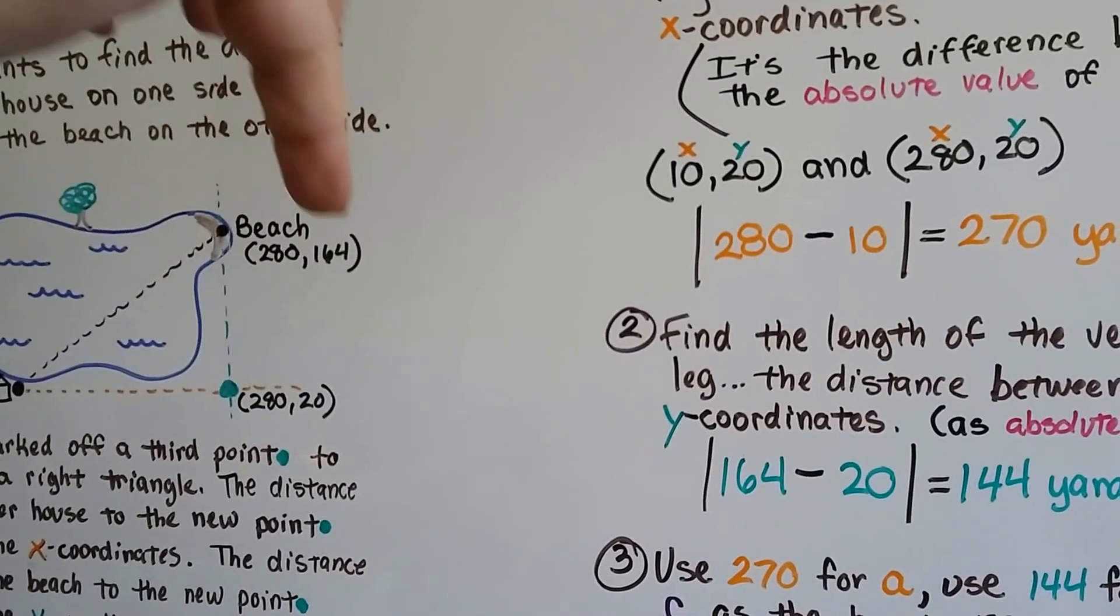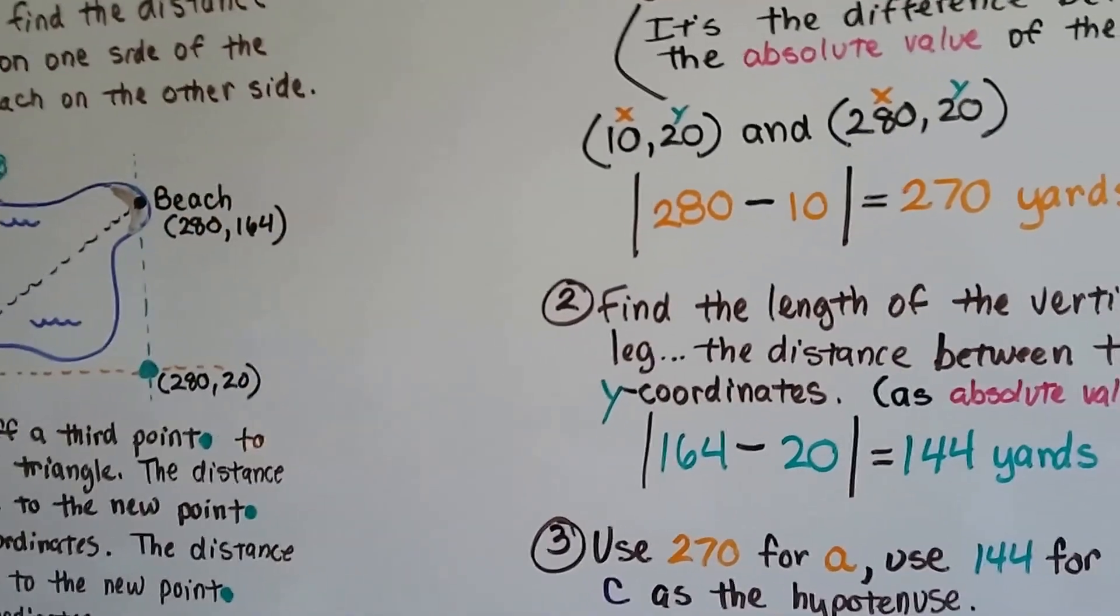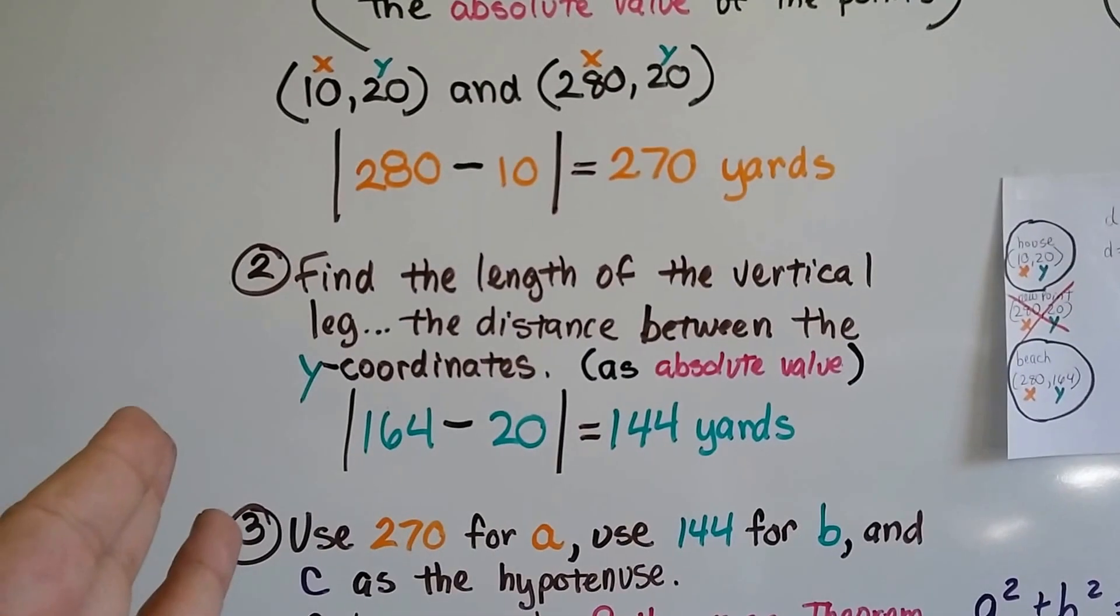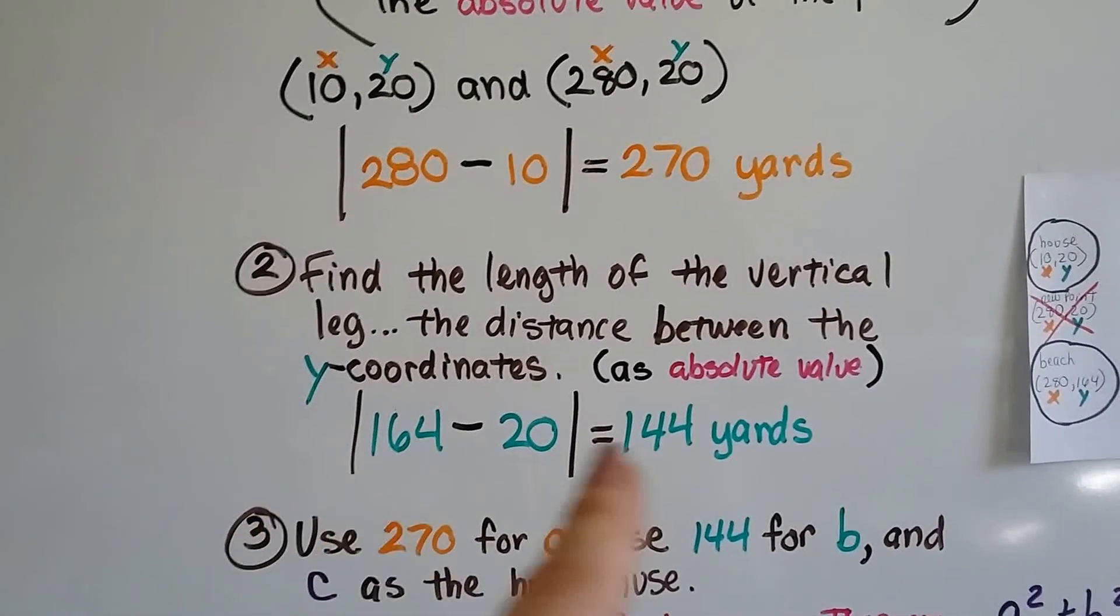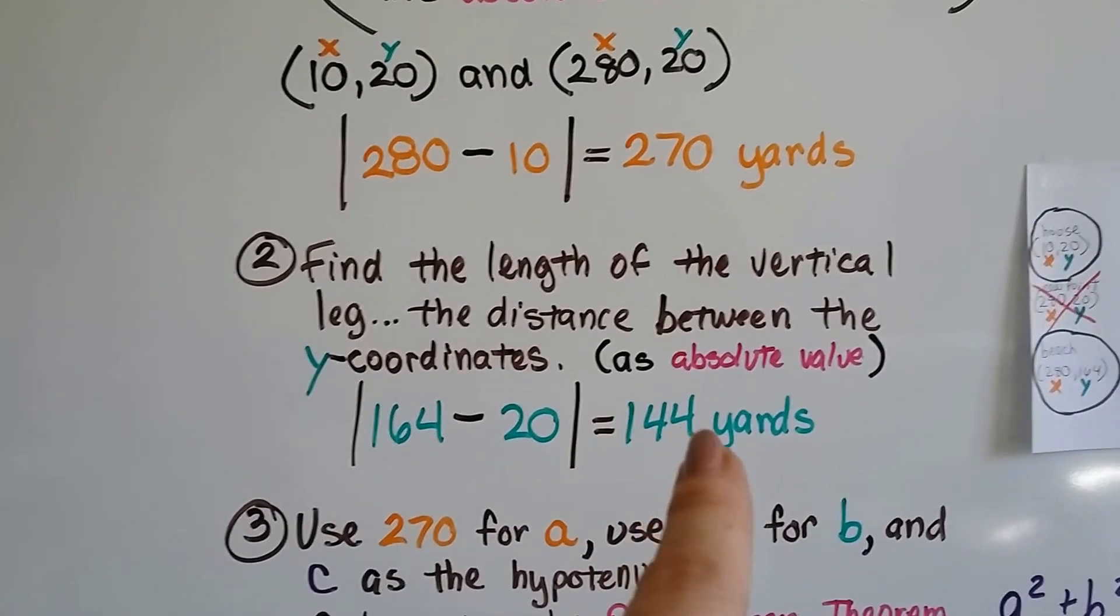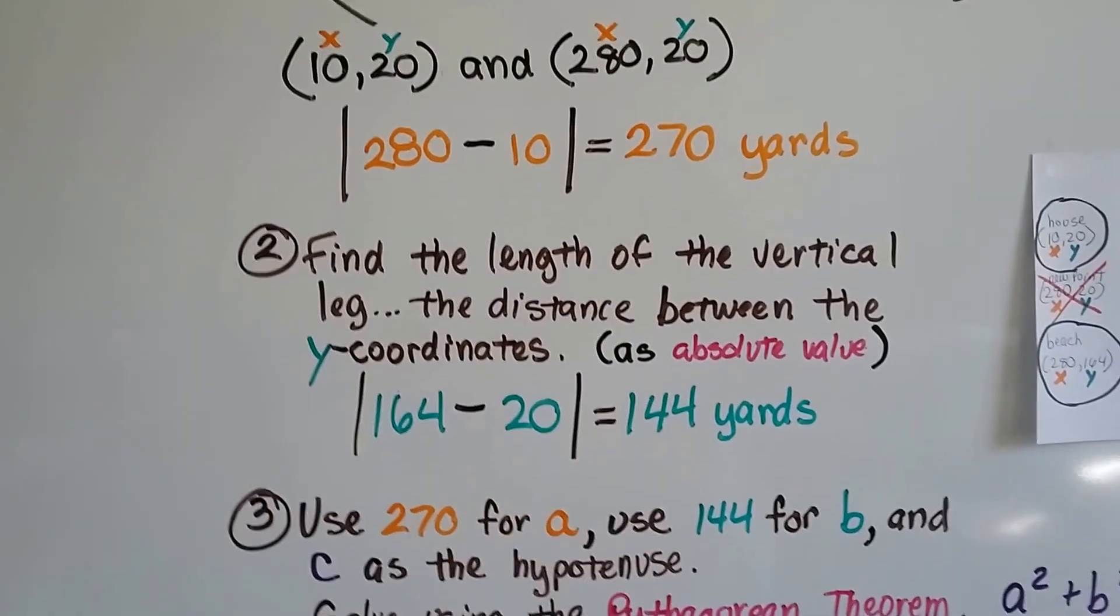These are the x-coordinates, and these are the y-coordinates. So we have 164 minus 20 as absolute value. And that comes out as 144 yards. So now we've got a and b.